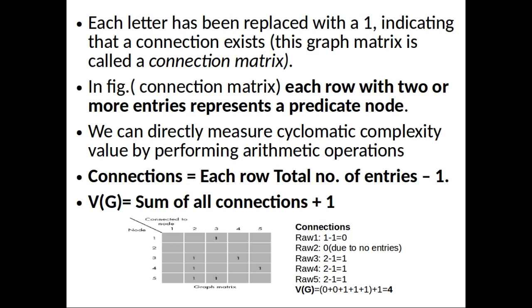The cyclomatic complexity V(G) from this graph matrix is calculated by finding the sum of all connections plus one. The sum across rows one through five is three, and three plus one equals four. So the cyclomatic complexity of this graph matrix is V(G) = 4.